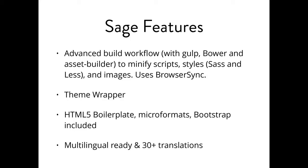Let's talk about what Sage does, not just what it is. It's got an advanced build workflow with Gulp, Bower for package management, and an Asset Builder that one of our team built specifically for this — now fairly popular on GitHub for advanced front-end workflows. It minifies scripts, pre-processes CSS, and also minifies your images — doing PNG and JPEG compression automatically as you work, updating them for you.